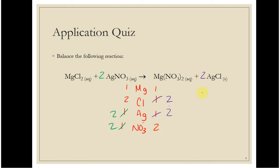The way that you would read this would be: one magnesium chloride reacts with two silver nitrates to produce magnesium nitrate and two silver chlorides. This is aqueous, aqueous, aqueous, and solid.